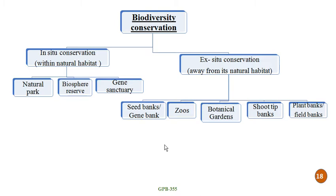Since biodiversity is very important for our day-to-day life and sustainable lifestyle, we have to conserve it. There are two methods of conserving biodiversity. The first is in-situ conservation and the second is ex-situ conservation. In-situ conservation means conserving biodiversity within its natural habitat, in the form of national parks, biosphere reserves and gene sanctuaries. In the case of ex-situ conservation, we conserve biodiversity away from its natural habitat, in the form of seed banks, gene banks, zoos, botanical gardens, sperm tip banks, plant banks and field banks.